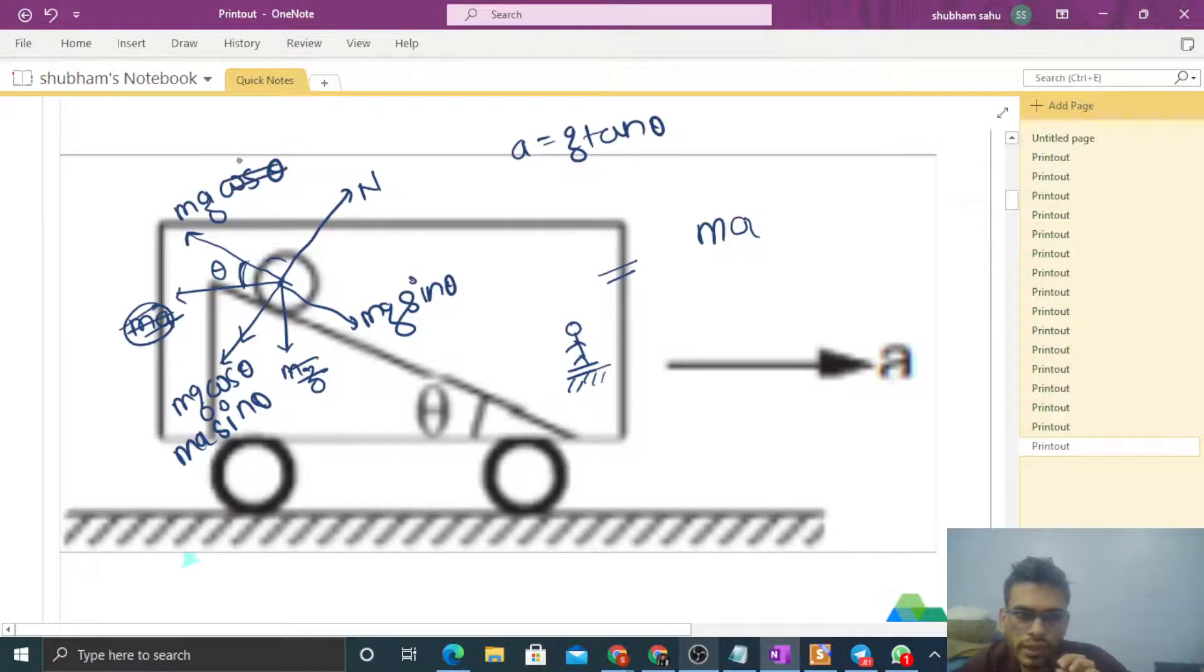So look, parallel to the incline surface: mg sin theta upward and mg sin theta downward. So the net force will be zero. The normal reaction will take care of the perpendicular components.